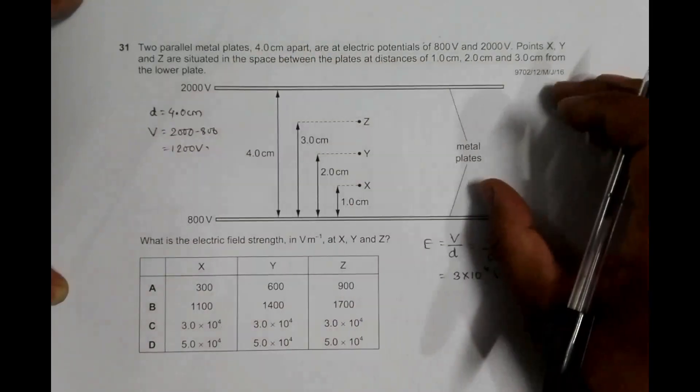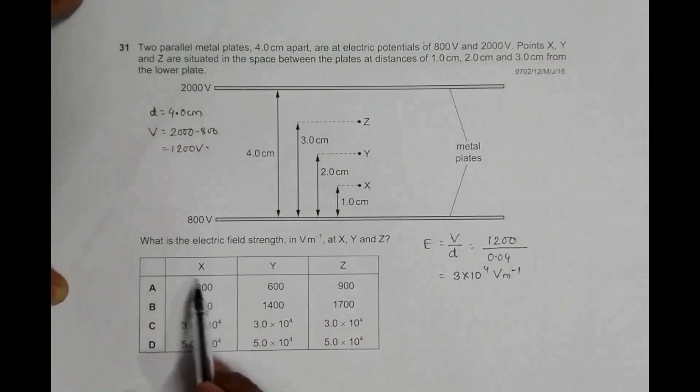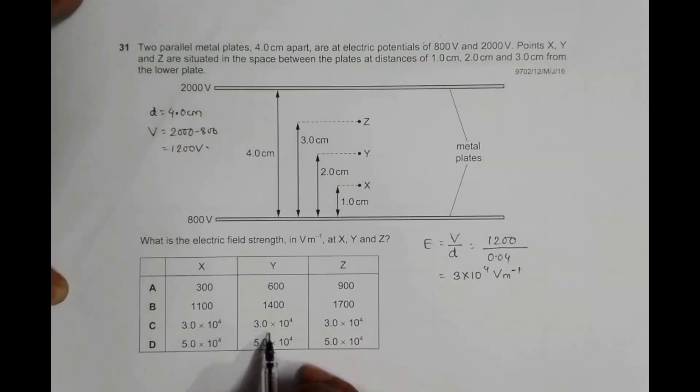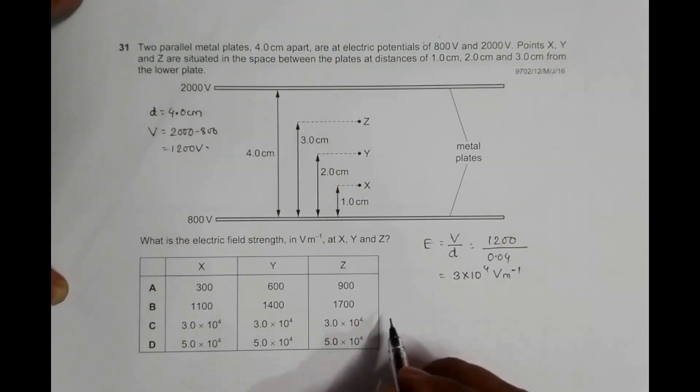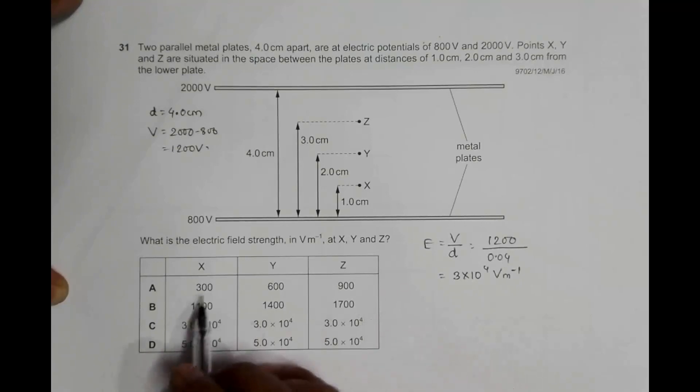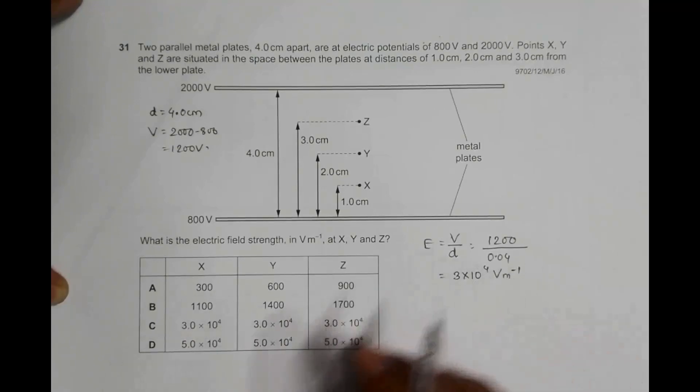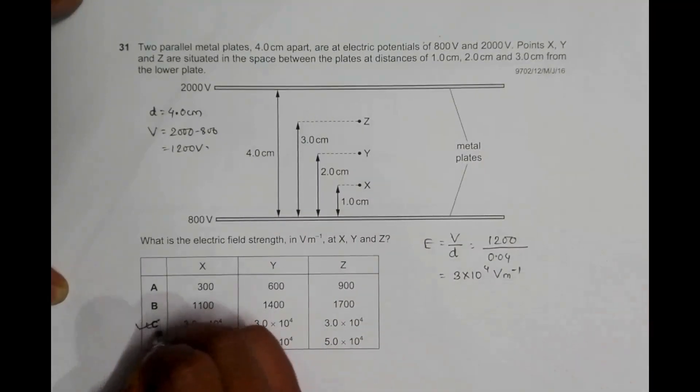So that means among these choices, only choice number C matches the real events here. Other choices seem to vary, but it says that things are constant everywhere at X, Y, and Z. So choice number C will be the correct answer.